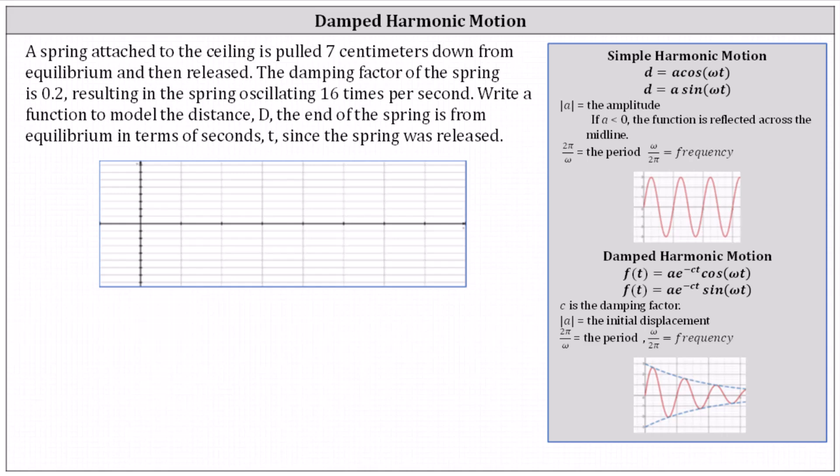Going back to the given information, because the spring is pulled seven centimeters down from the equilibrium, we know the absolute value of a must equal seven. Because it's being pulled down, the displacement is negative, and we know a equals negative seven.